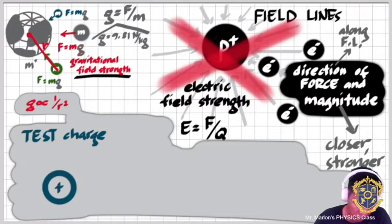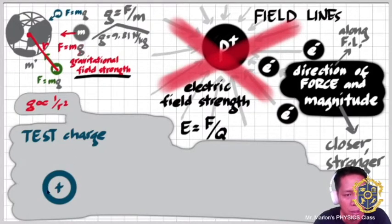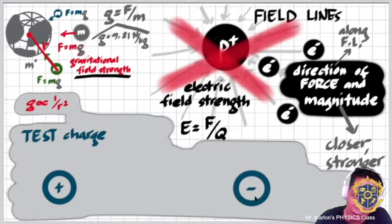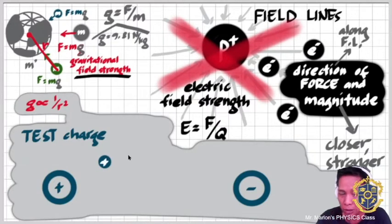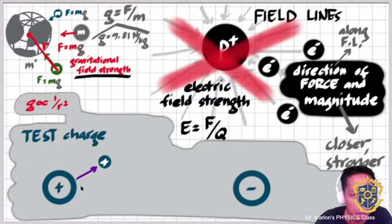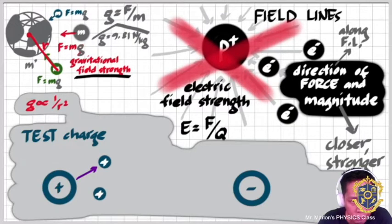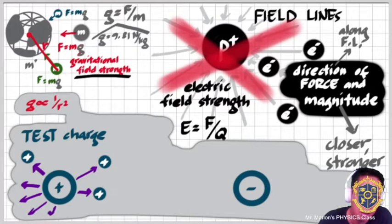Let's see — we have a positive charge particle; what would be the convention for drawing field lines around it? If we also have a negative charge particle, we place a test charge (a positive charge) near it. The direction in which the test charge moves tells us the direction of the field lines. In this case the test charge is repelled by the positive source charge, so the field lines point outward from it.